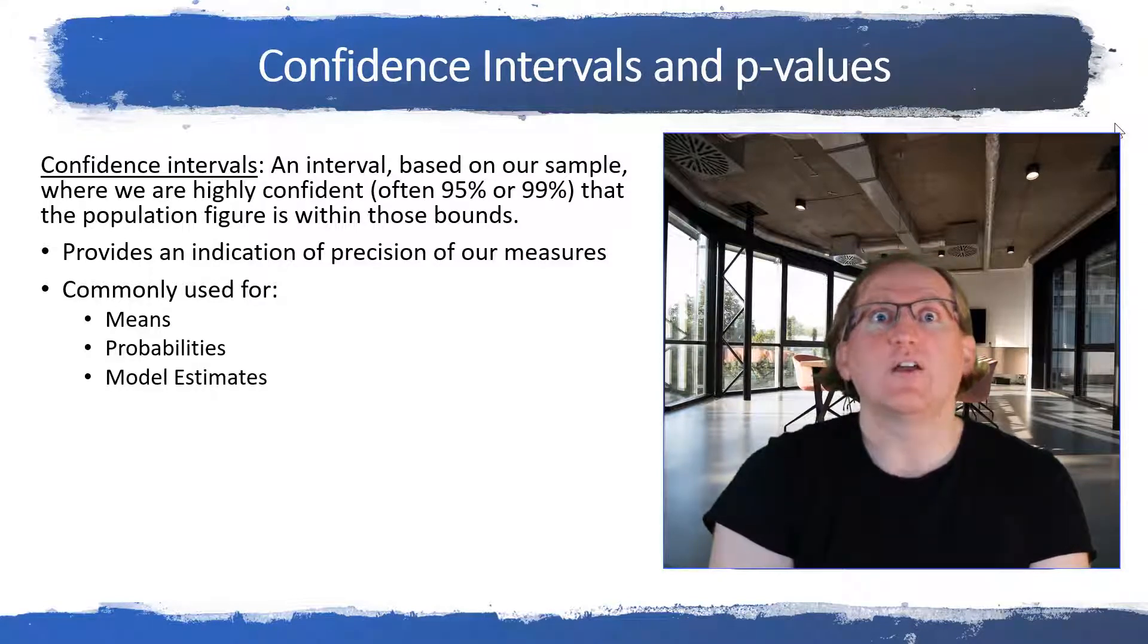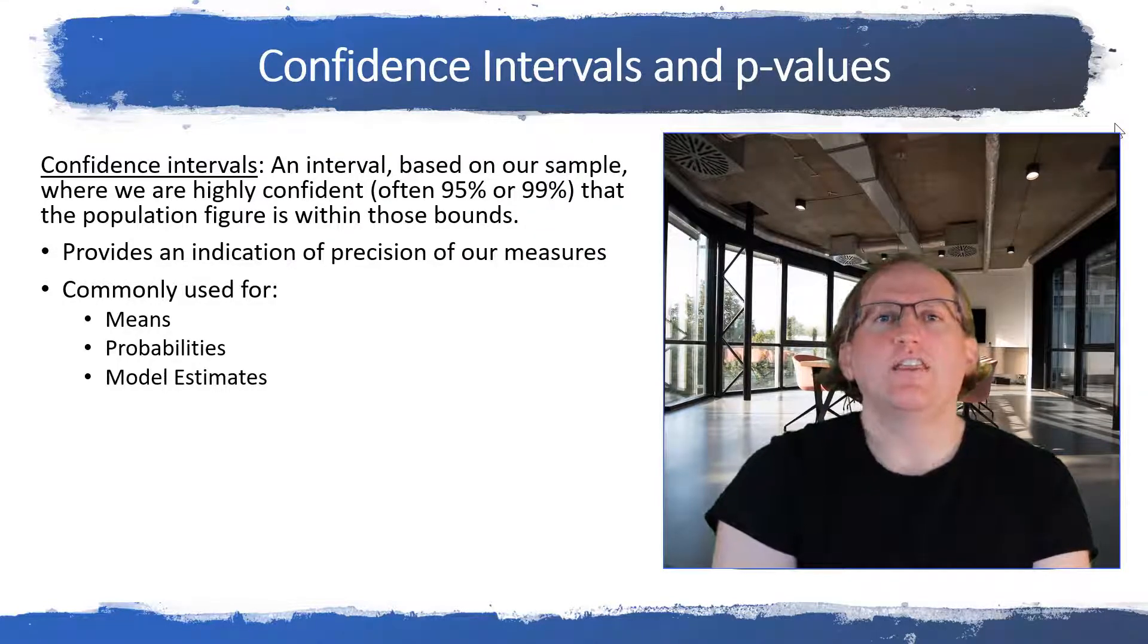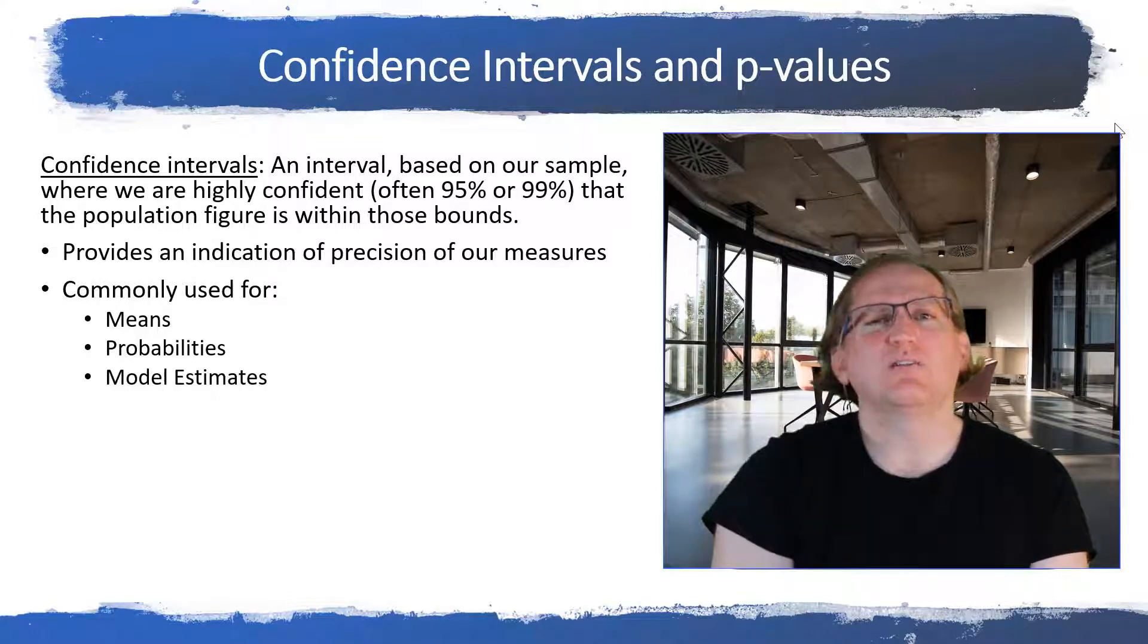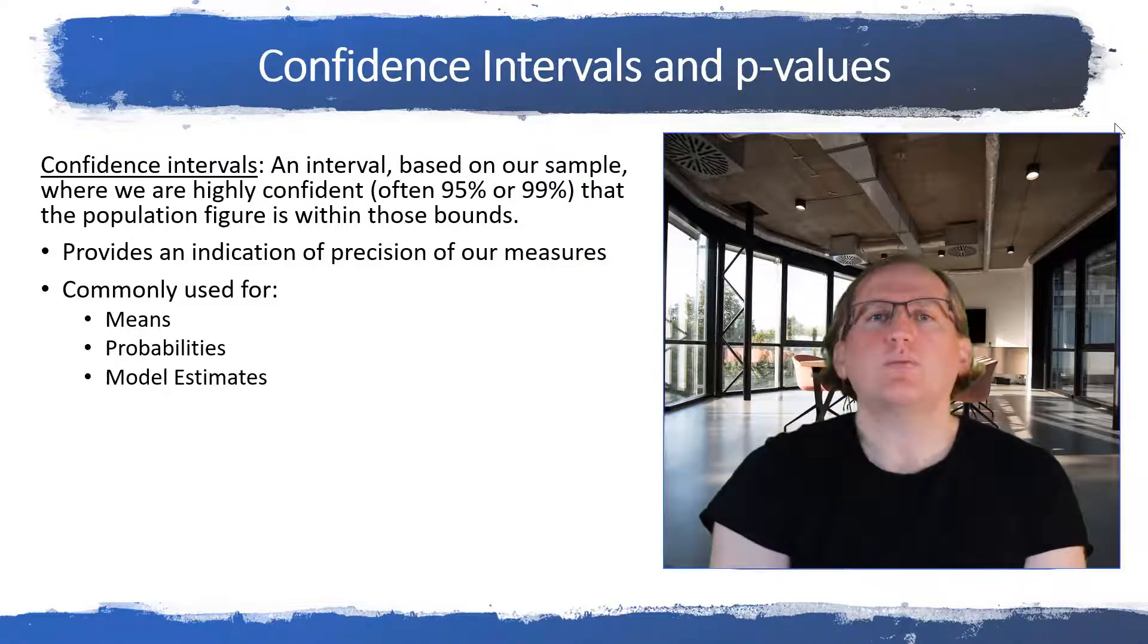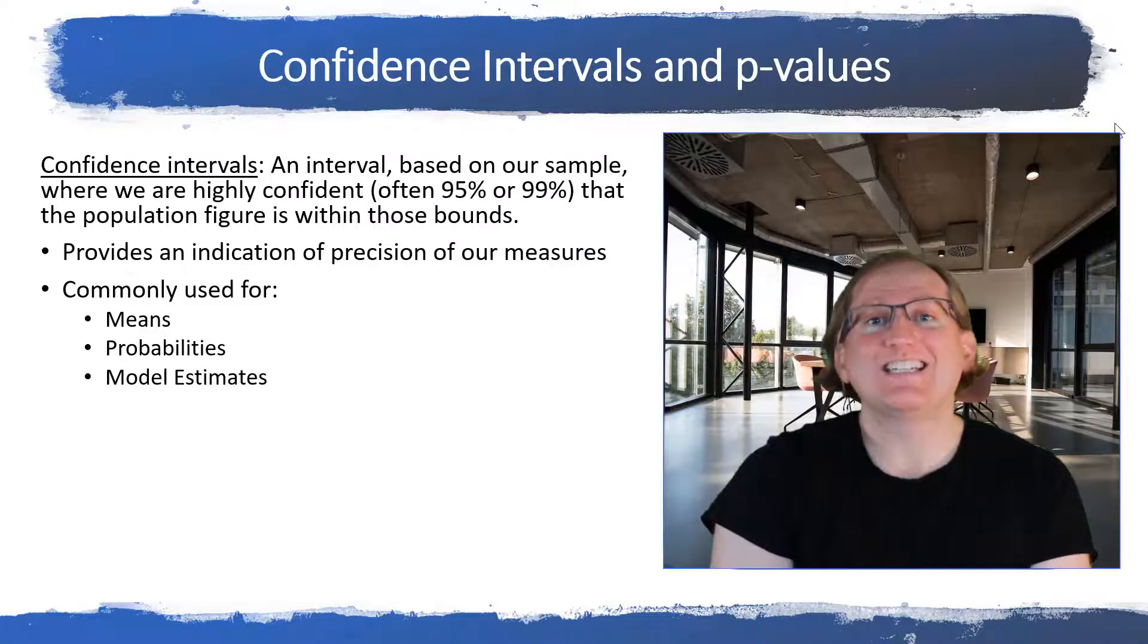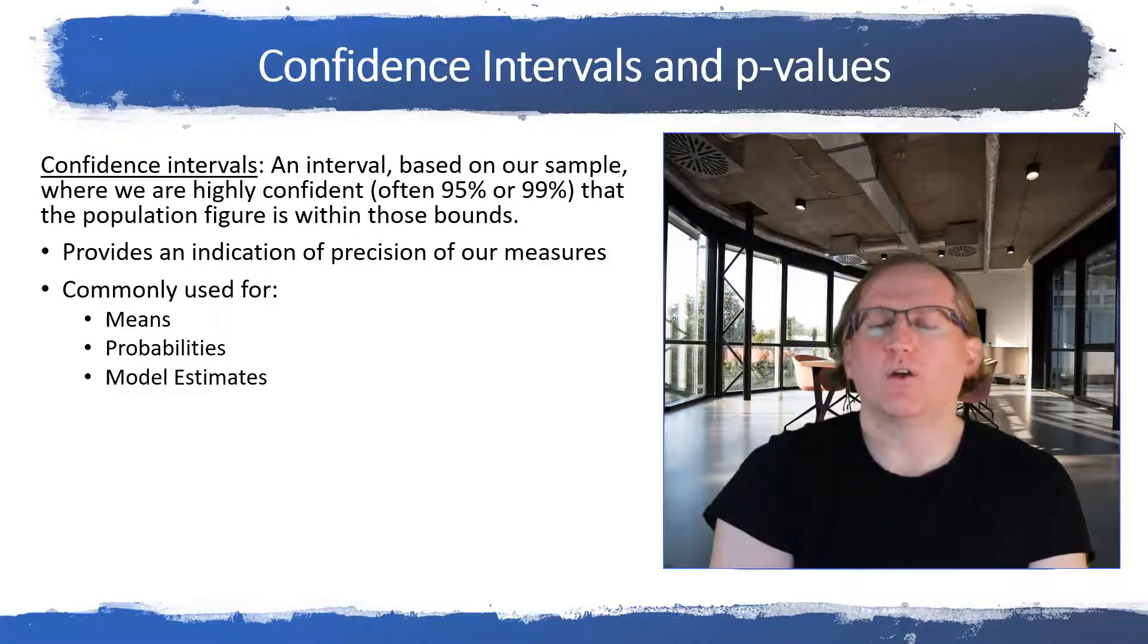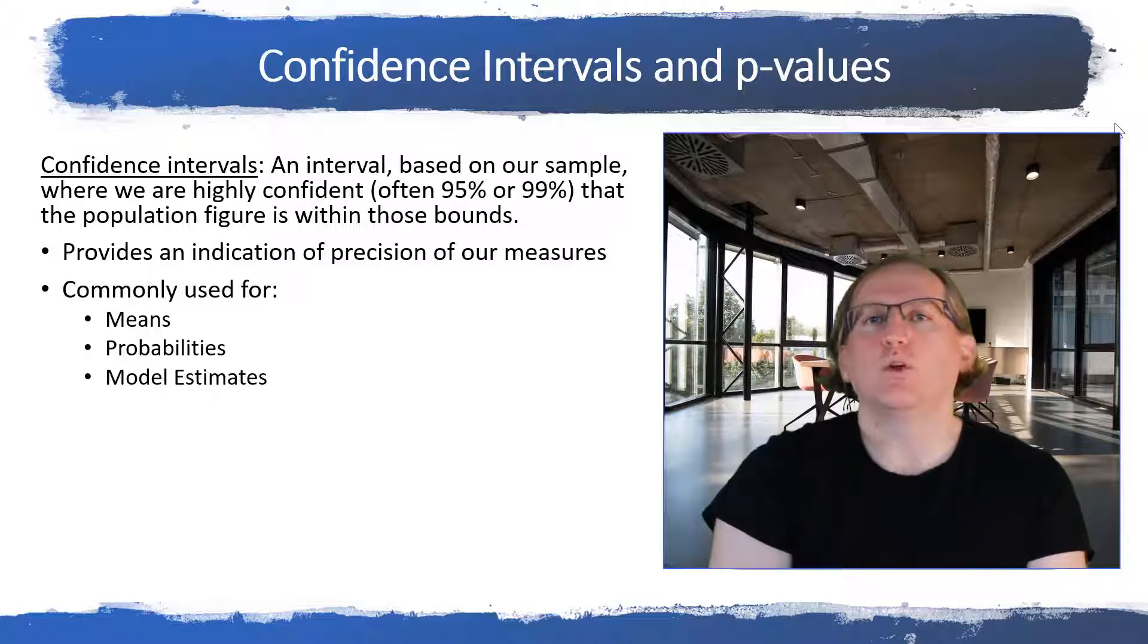Instead of quoting just a single number we have a little bit of precision there. If we had a wider interval, so instead of 25 to 29, it went from 20 to 42, then that would show us that we had a lot less precision. And in fact if we were estimating an average age and it was anywhere between 20 and 40, it's probably not actually very useful. So we get that idea of precision. And so we'll see confidence intervals used for our means. They can be used for proportions and percentages. And they can also be used for figures in our statistical models. So where we're looking at how big a difference is, or we're looking at the effect of one variable on another variable. Then a confidence interval will give us that interval. That will give us just kind of a little bit more information than if we were looking at a single figure.